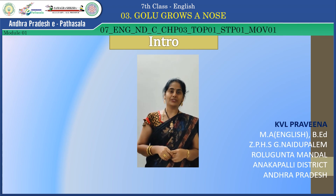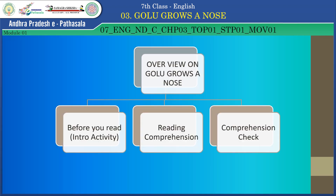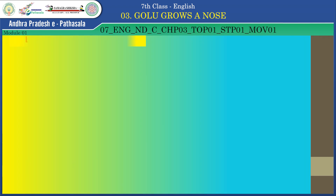Let's have an overview of the lesson 'Golu Grows a Nose.' There are three parts: one is 'Before You Read,' the second one is 'Reading Comprehension,' and the third one is 'Comprehension Check.' Now we'll check the learning objectives of this lesson.